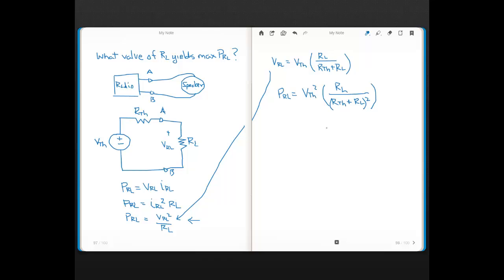Okay. So now here's our expression for PRL. And this is the equation that we want to maximize with respect to RL, right? Because again, the question we want to answer is, what value of RL will give the maximum power at RL? Well, from calculus,